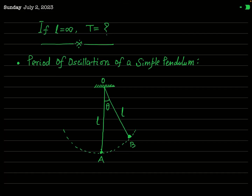You know about the simple pendulum and the very famous formula for its time period, well known to every person. In this figure you can see that a bob is attached to a string of length l, performing oscillations about the equilibrium position. Commonly, when asked for the time period of a simple pendulum, people say the expression is 2π√(l/g), where l is the length of the pendulum and g is the acceleration due to gravity.